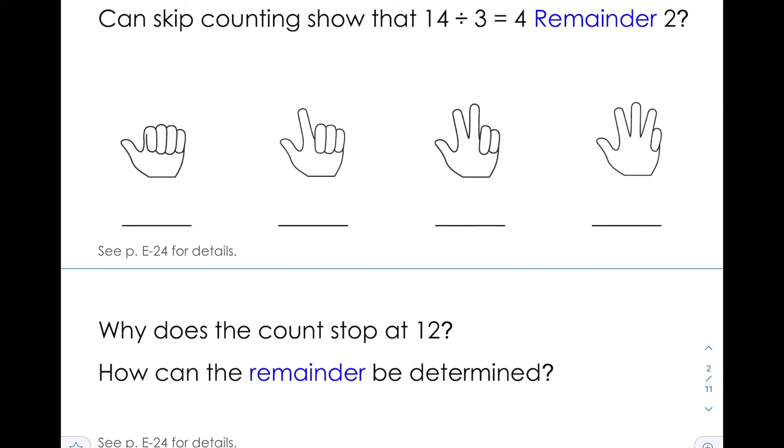Can skip counting show that 14 divided by 3 is equal to 4 with a remainder of 2? Well, let's take a look. We're dividing by 3, so we're going to skip count by 3. So we're going to start with 3, 6, 9, 12.